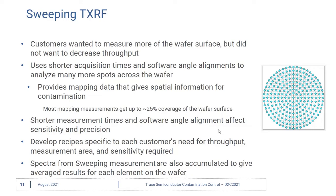and the sensitivity they require for their control limits in the fab. The spectra from the sweeping measurement can also be accumulated, so all the spectra from all the measurement points across the wafer can be summed to give an average result for each element on the wafer.